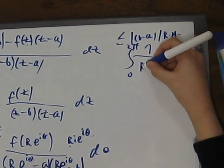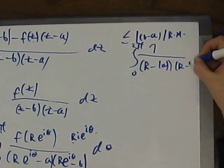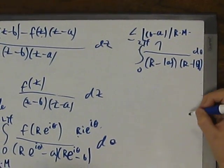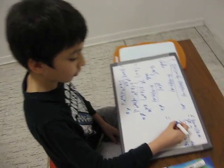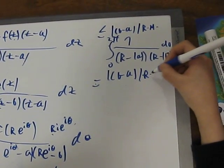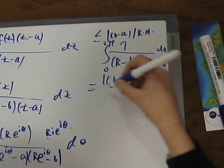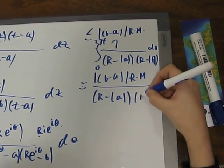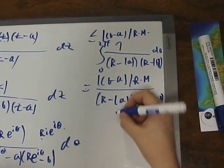R minus the modulus of A times R minus the modulus of B. This is a constant, right? So, we can take it out of the interval and we get this equal to B minus A times M times 2π.